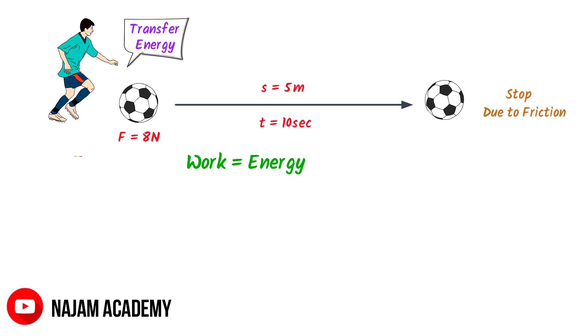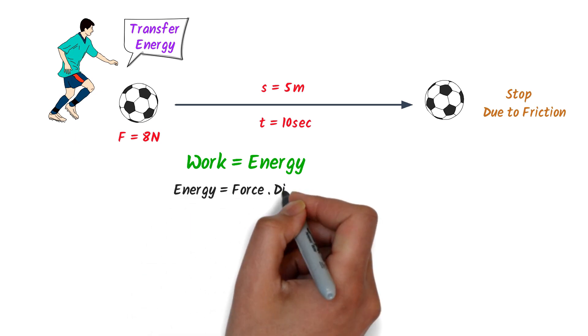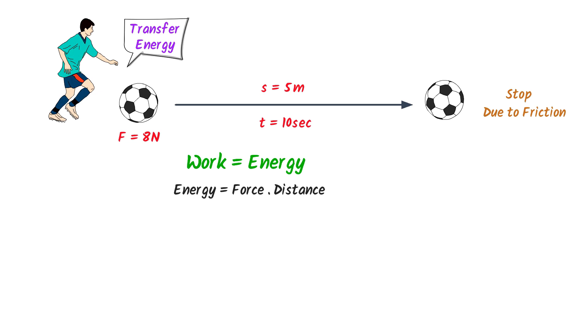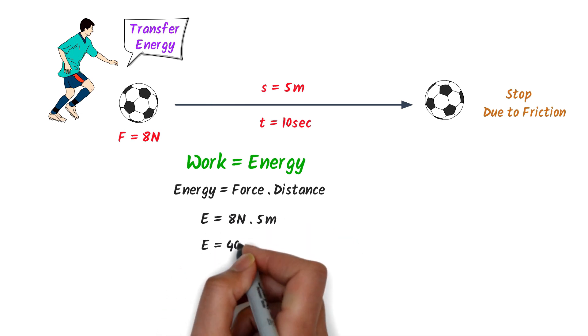Now if I ask you, how much energy is transferred to the ball? The answer is simple. Energy is equal to force into distance covered. We know that we exert 8N force and the ball covers 5 meter distance. We get 8N into 5 meter is equal to 40N meter.